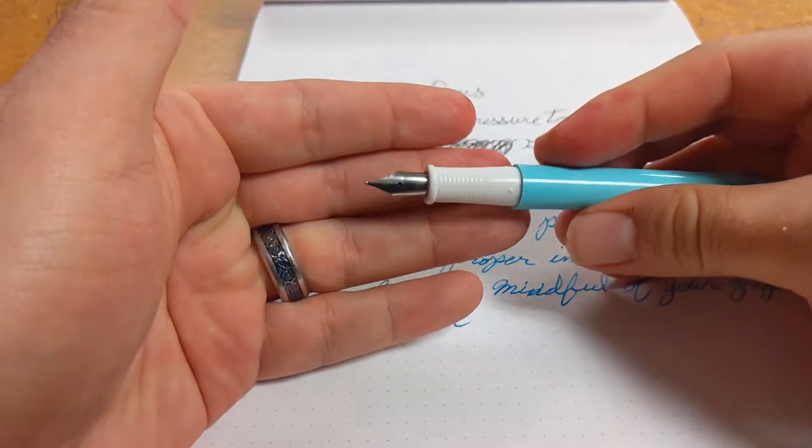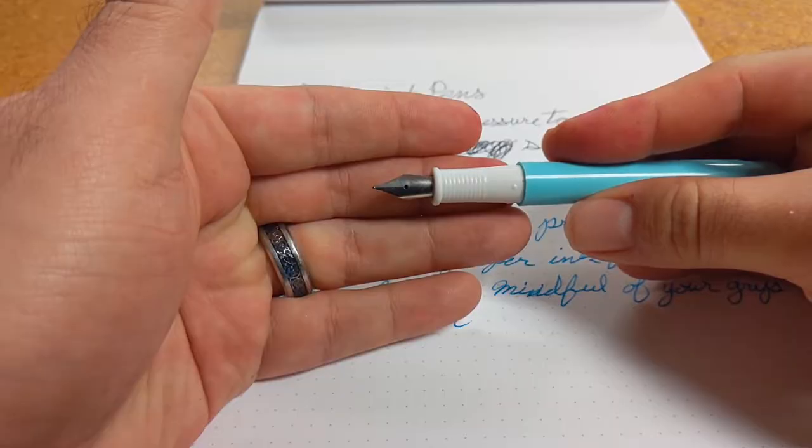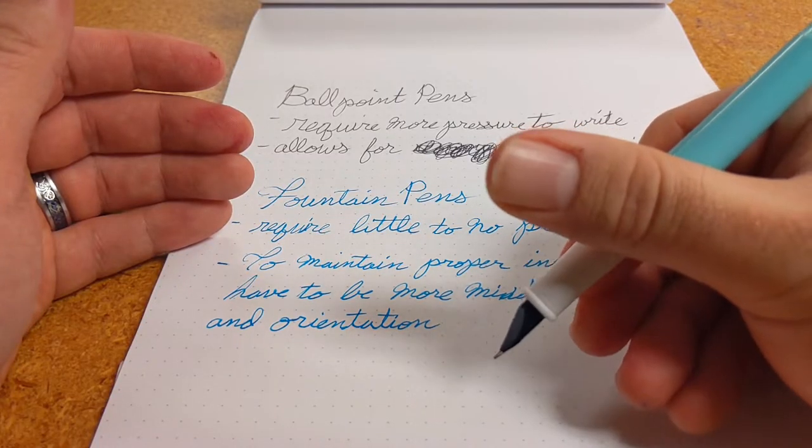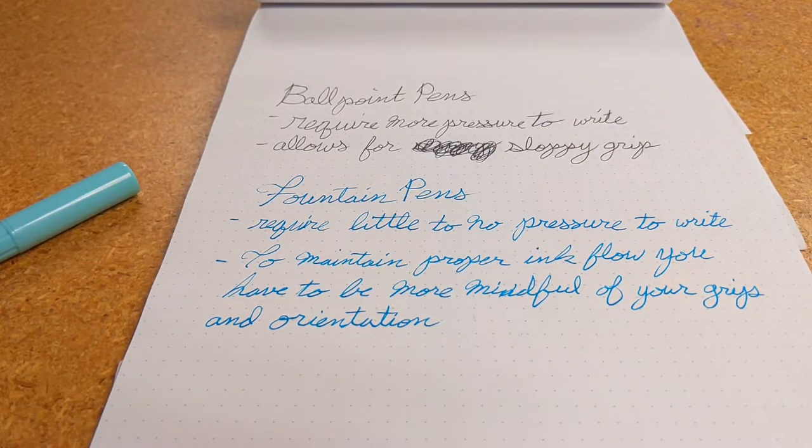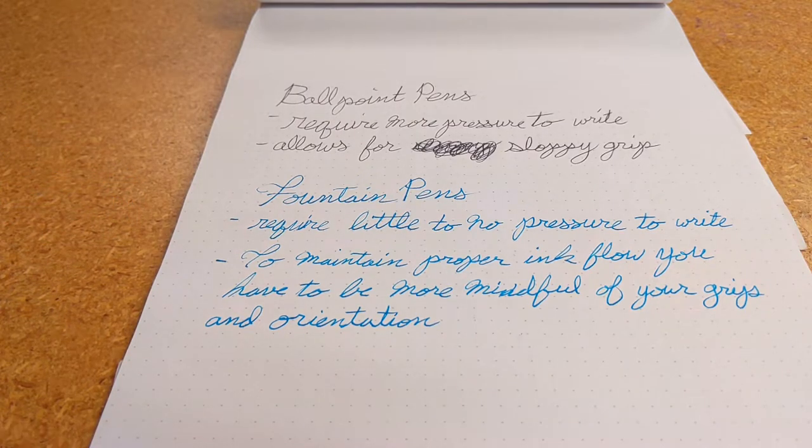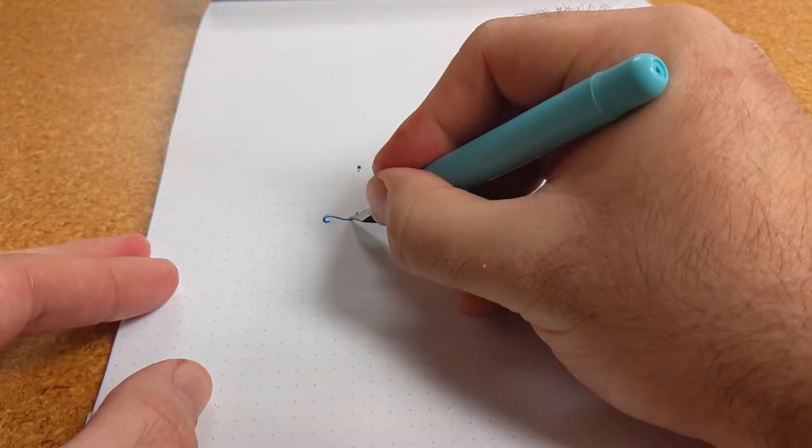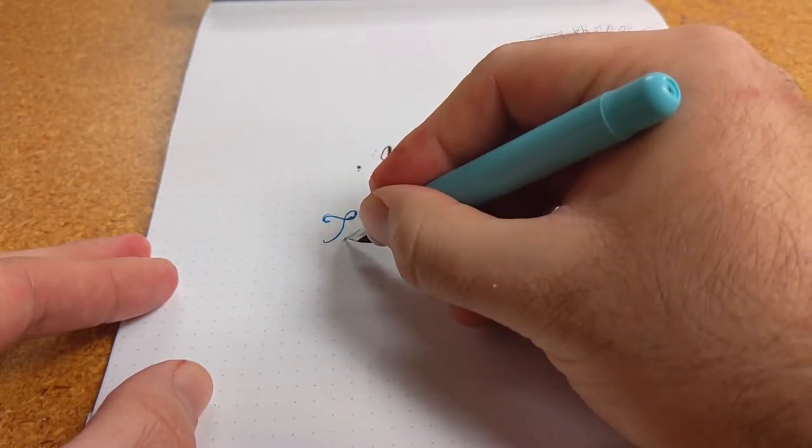With fountain pens, they should require little to no pressure to write and require you to watch the rotation of the nib, which in turn reminds you to be more mindful of your writing posture, which I have also found to reduce hand strain and allow me to write more legibly for longer.